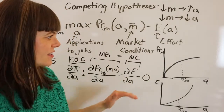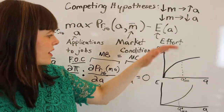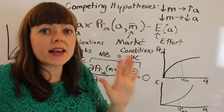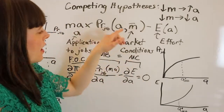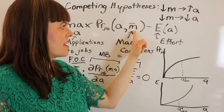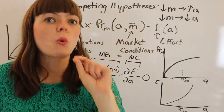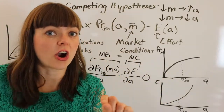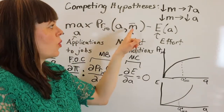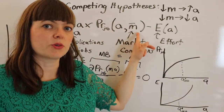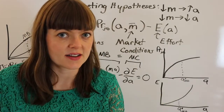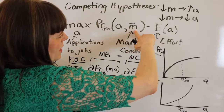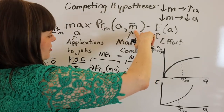Doing the comparative statics is going to involve rotating the graphs to see what happens when we change an exogenous variable. Comparative statics is figuring out what happens to your optimal choice A* when one of your exogenous variables changes. It's a thought experiment to predict what's going to happen in the future. So we're going to see what happens when market conditions deteriorate.